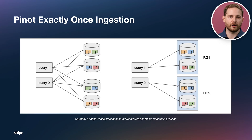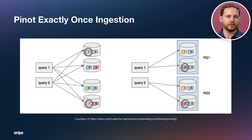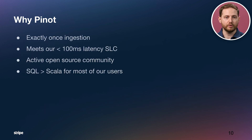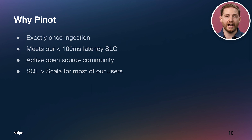You may have come across this diagram of Pinot showing how replica groups can help with query performance and availability by putting distinct sets of segments on a server or group of servers. What's interesting is each Pinot server is consuming that topic partition on its own and tracking its own offsets. So when one server restarts, the other can serve queries, and the initial one has time to catch up — meaning Pinot has exactly-once semantics, which is really important. In our initial experiments, we also found Pinot can easily support our sub-100 millisecond latency SLCs, has a very active open-source community, and critically offers a SQL interface, opening real-time analytics to many more users than the previous Scala implementation.